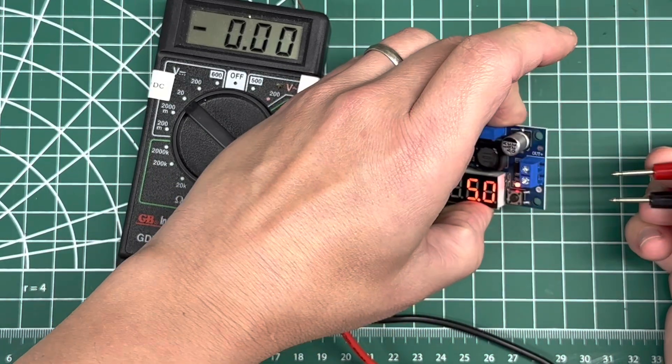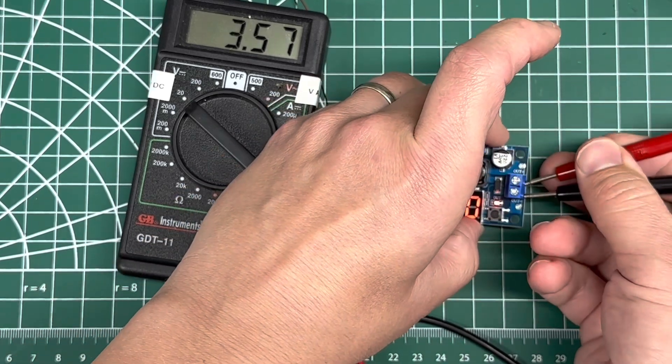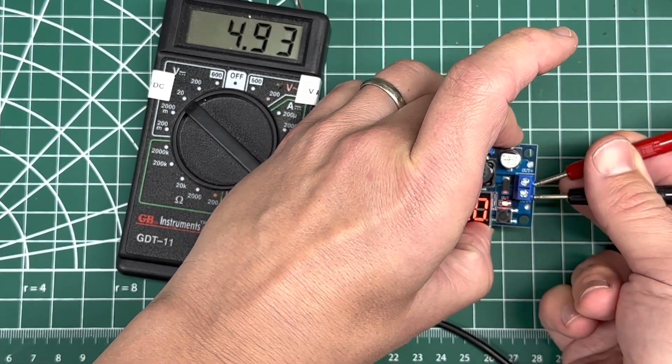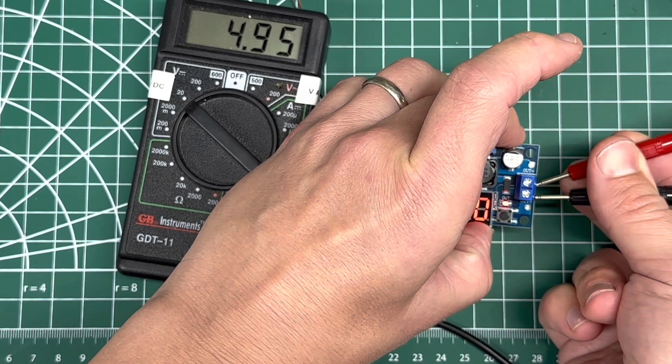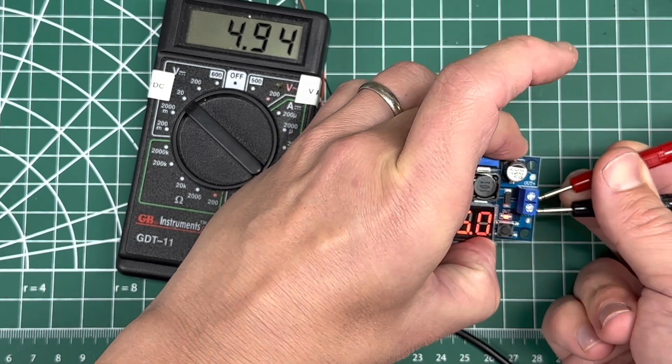So I'm going to check—I've got positive on top and negative down here. What does my meter say? I'm at 4.93. So 4.95, 4.96, 4.97. I could adjust this.